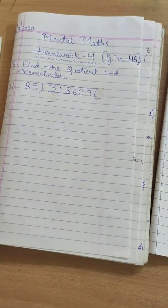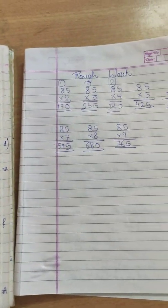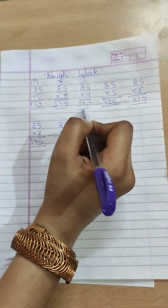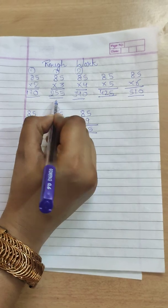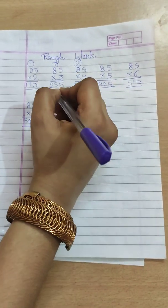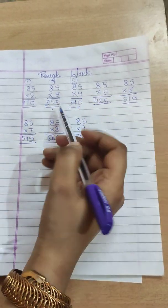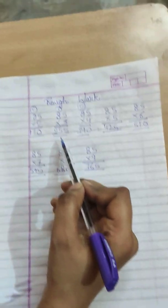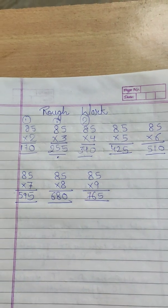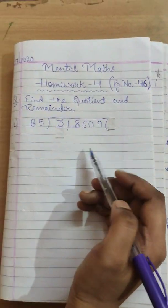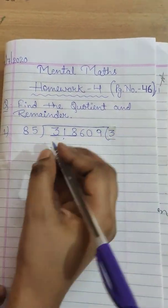318 is coming in our 85 table or any number which is less than it. So let's take it. 318 is not coming anywhere, so we will take the number which is less than. So here, 85 threes are.